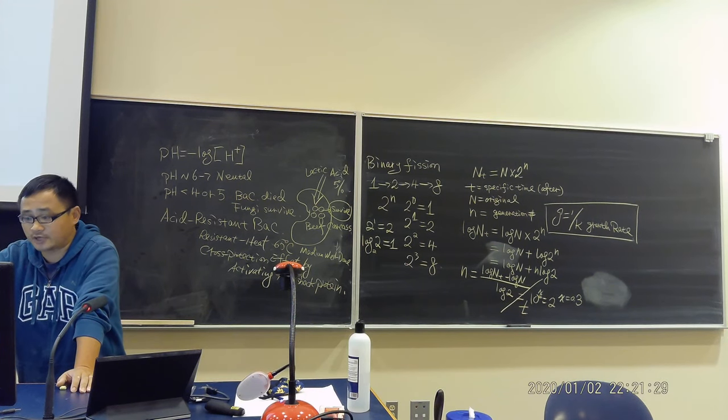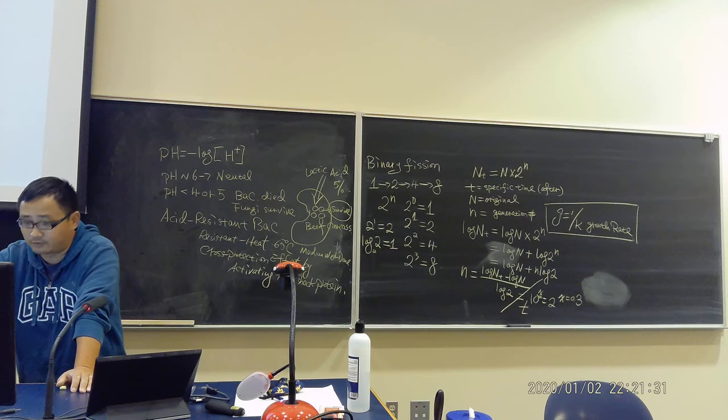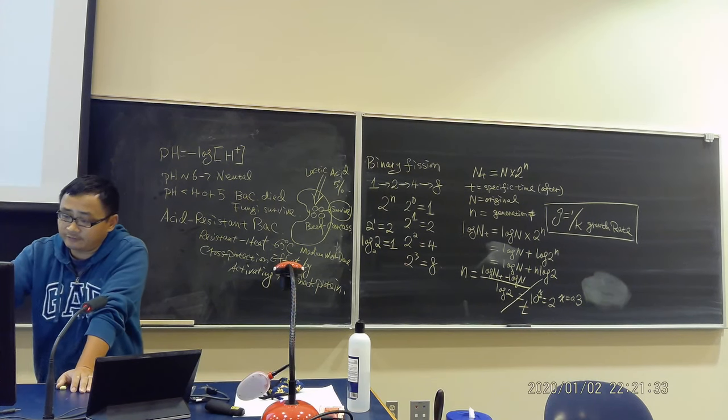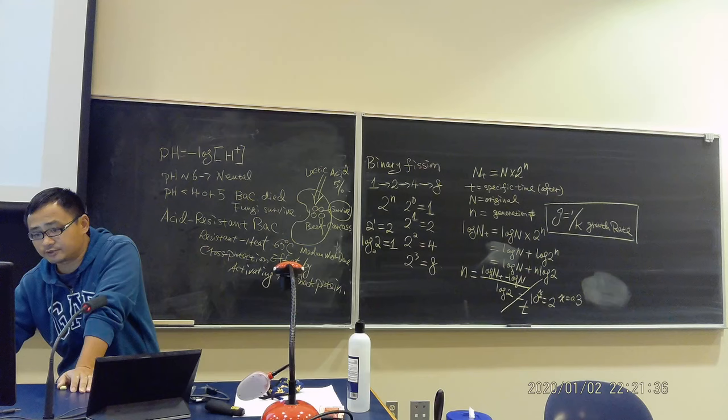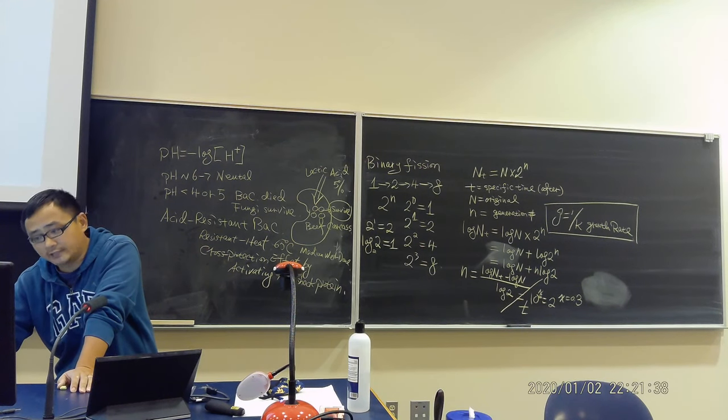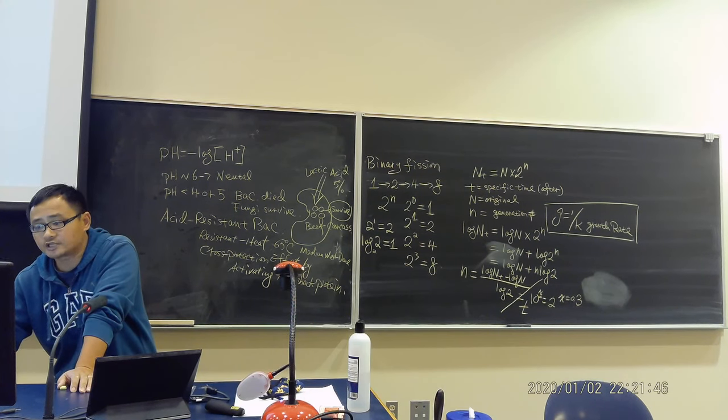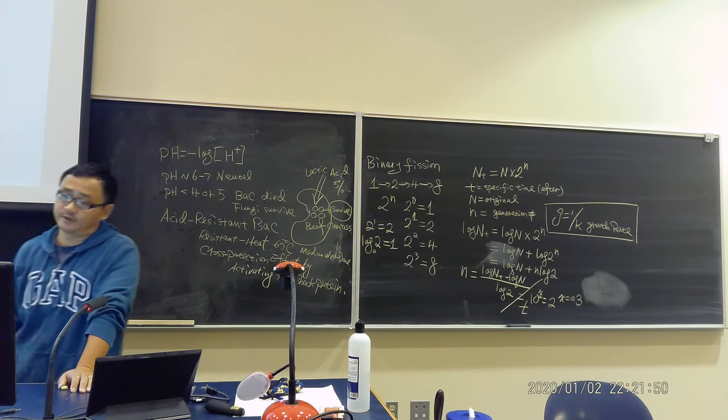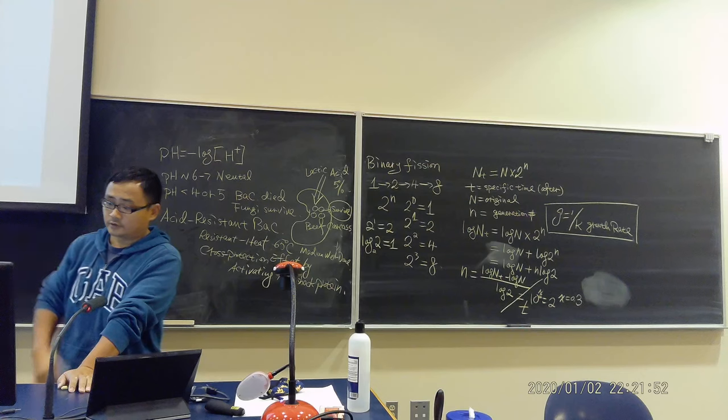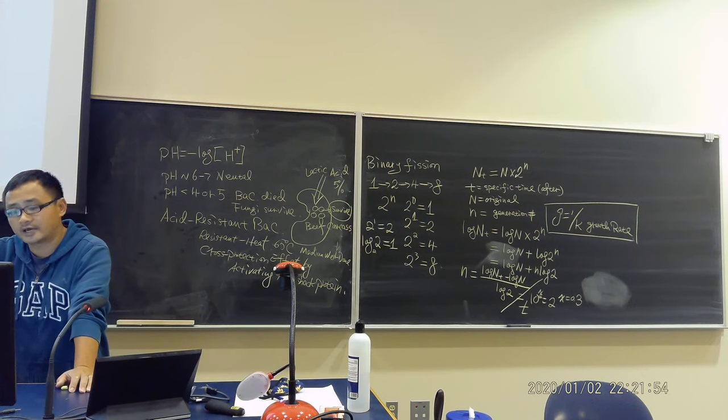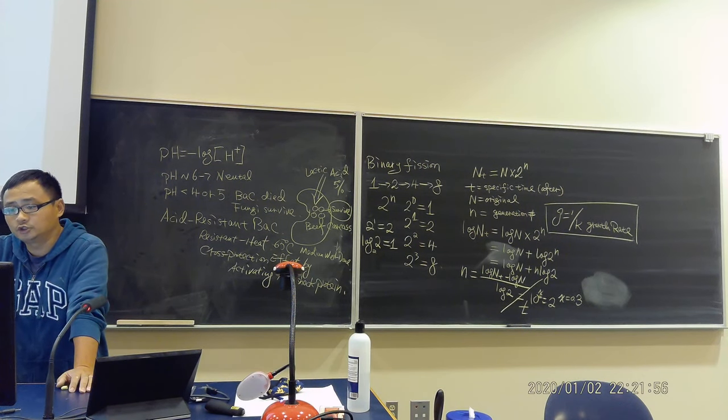And for every bacteria, there is a minimal temperature required to grow. There is a maximum temperature. You cannot be higher than that. The bacteria is going to die or they're not going to grow. But they always have an optimal temperature. This depends on different types of bacteria. This slide tells you we could categorize bacteria into different categories.